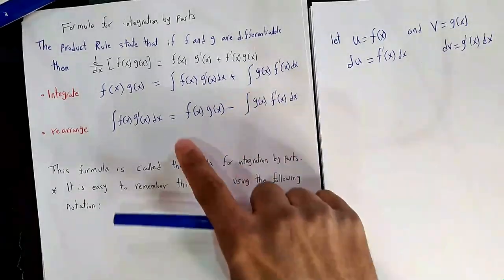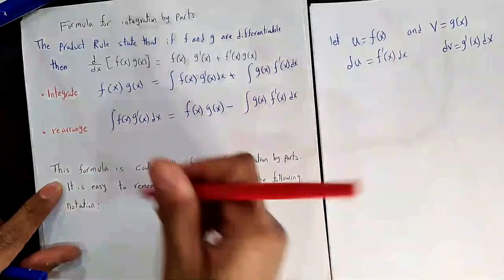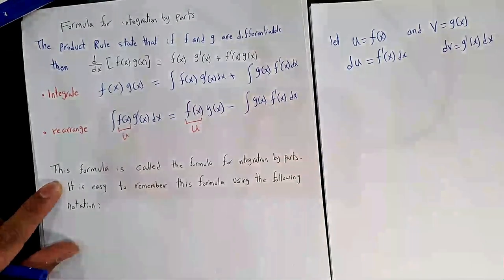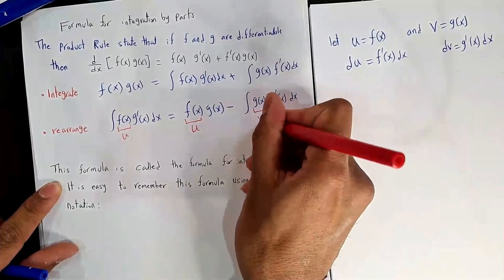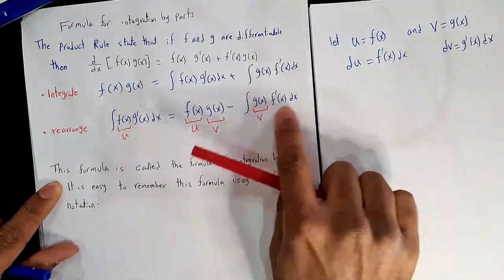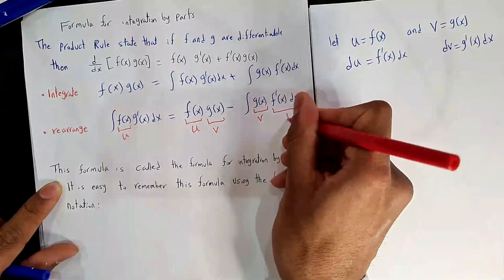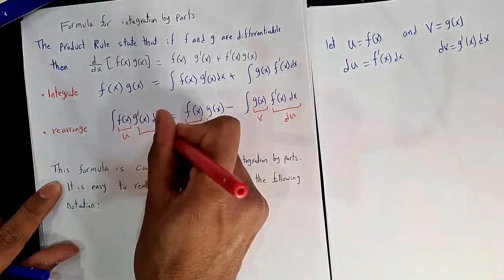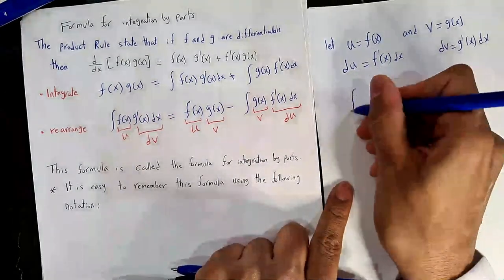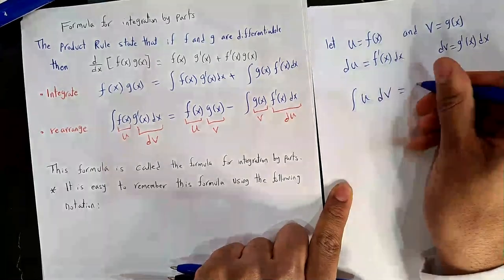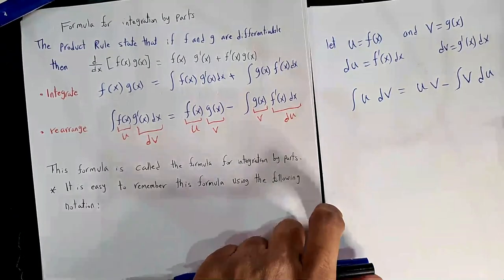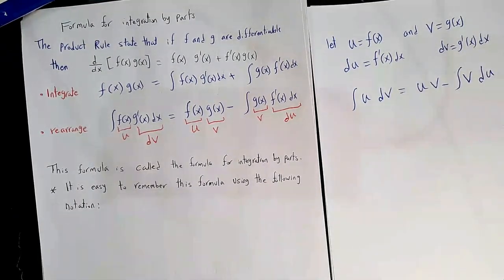We will use a box notation to memorize this. Write u in one box and dv in the other, then du and v in the remaining boxes. The formula says: multiply u with v (this way), then subtract the integral of v·du (the other diagonal). This is the pattern we need to follow. We need to choose something to be u and something to be dv, which comes from experience.